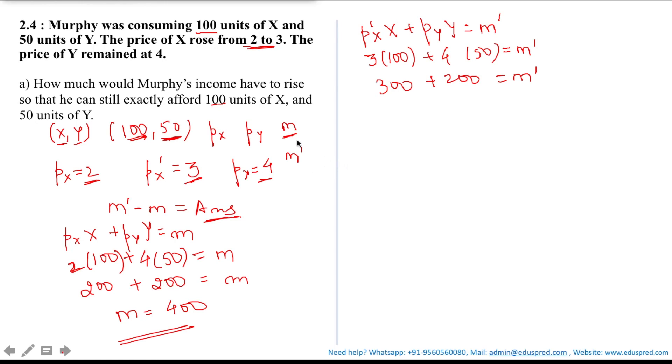Now see that in order to still afford 100 units of X and 50 units of Y with the new price of good X that is 3, Murphy needs to have the income of 500 but the question doesn't ask this.